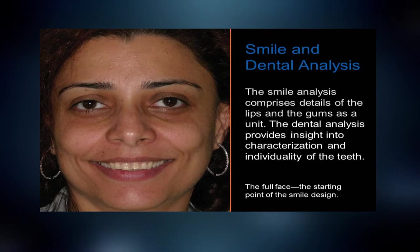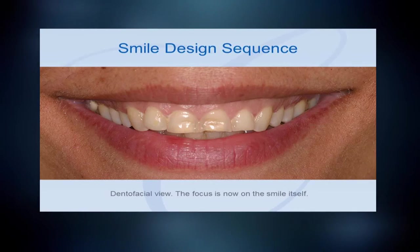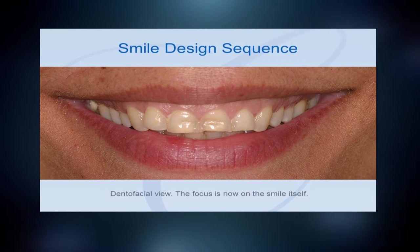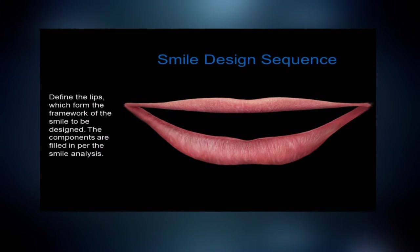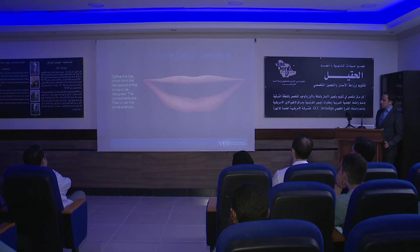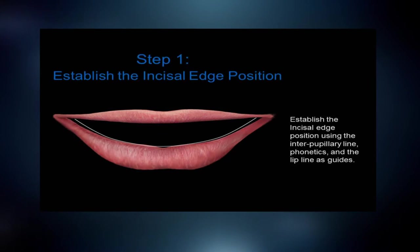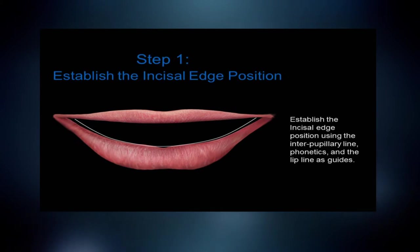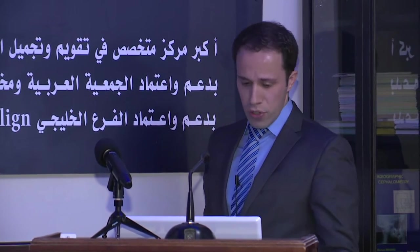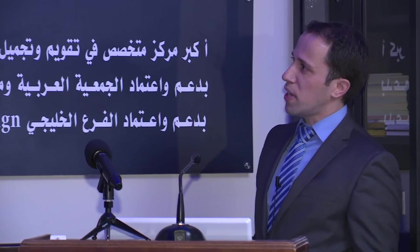We'll start with the sequence of the smile design. First we define the lips. Step one: we establish the incisal edge position. As we said, the incisal edge position should be parallel to the interpupillary line.